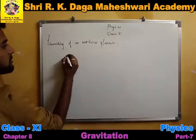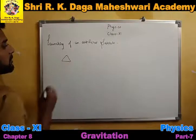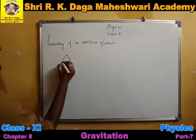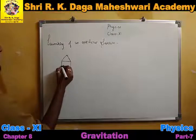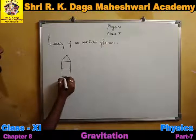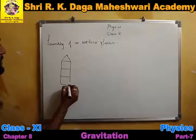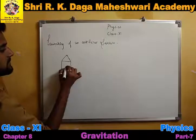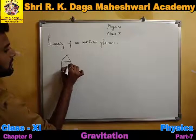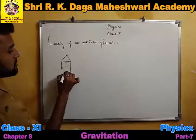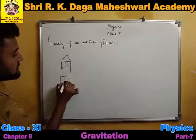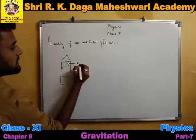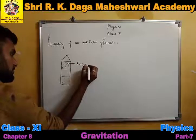So rocket propulsion — suppose this is the satellite. A satellite has some chambers attached to it. In these chambers, some gases are filled, and along with these gases, some explosives are also attached.